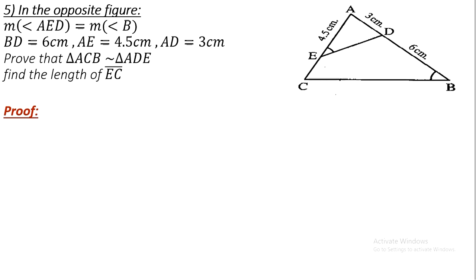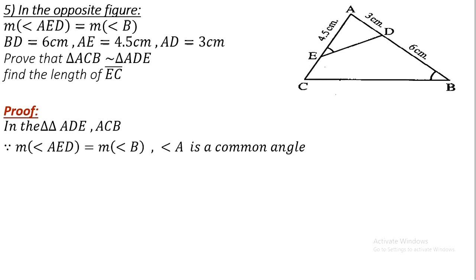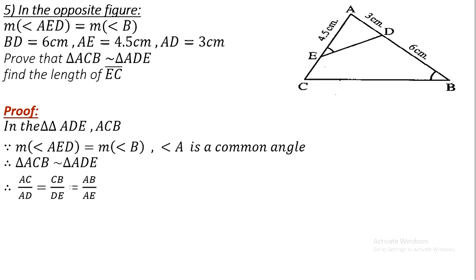In the two triangles ADE and ACB: since measure of angle ADE equals measure of angle B, and angle A is a common angle to both triangles, therefore triangle ACB is similar to triangle ADE. Therefore: AC/AD = CB/DE = AB/AE.